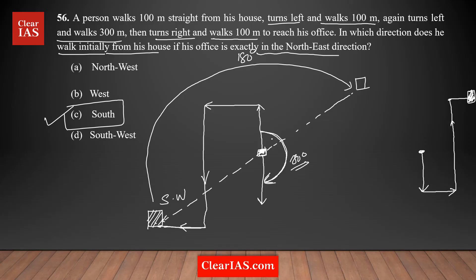Everything is rotated 180 degrees. So now you can see the office. This is the office — it is in which direction? Comparing it with the house, it's in northeast. Now it makes sense. The answer is confirmed.